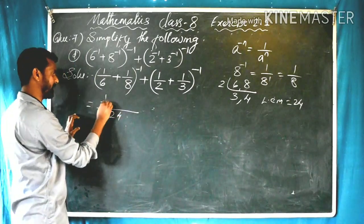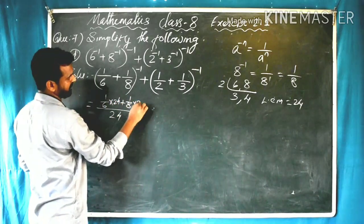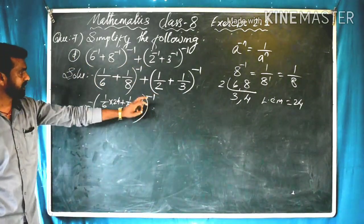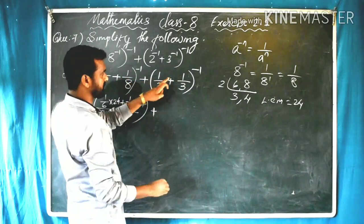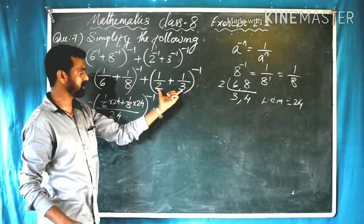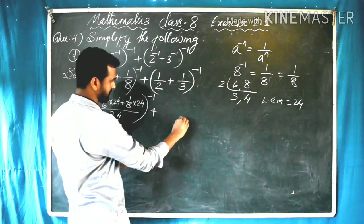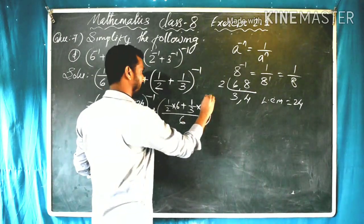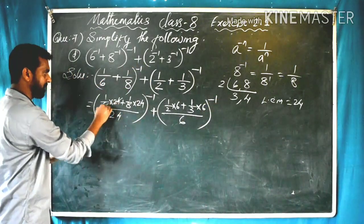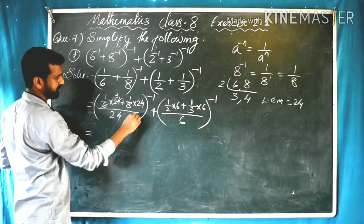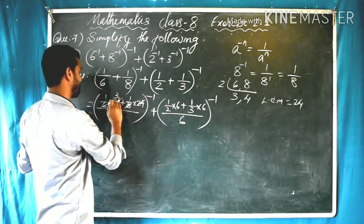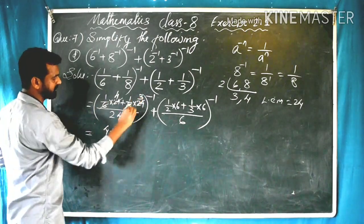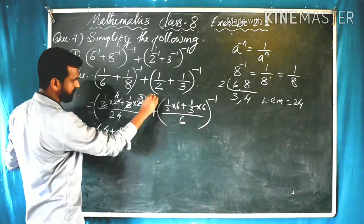For the numerator of 1/6 + 1/8: first rational times LCM plus second rational times LCM — 1 × (24/6) plus 1 × (24/8). The whole raised to minus 1 is still there. For 1/2 + 1/3, LCM of 2 and 3 is 6. Numerator: 1 × (6/2) plus 1 × (6/3), with the whole raised to minus 1. Cancelling: 24/6 = 4, 24/8 = 3, giving 4 + 3 = 7. And 6/2 = 3, 6/3 = 2, giving 3 + 2 = 5.